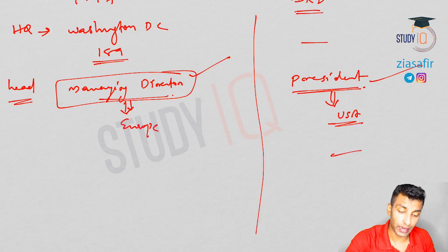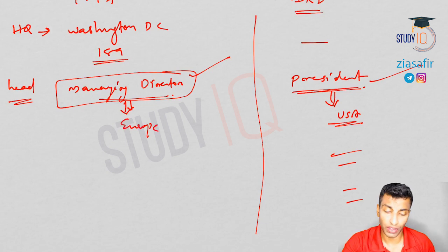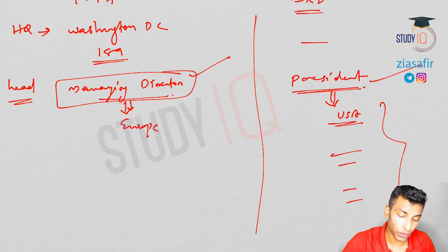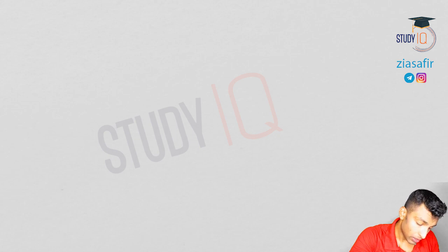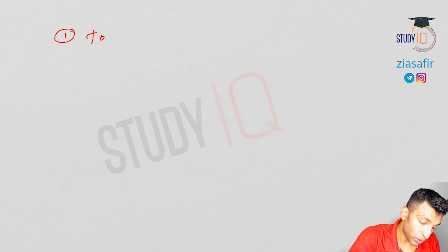Now let's discuss the main functions and objectives of IMF. I will not repeat what we covered for World Bank regarding objectives, methods of raising funds, and voting patterns. The first function of IMF is to promote international monetary cooperation.